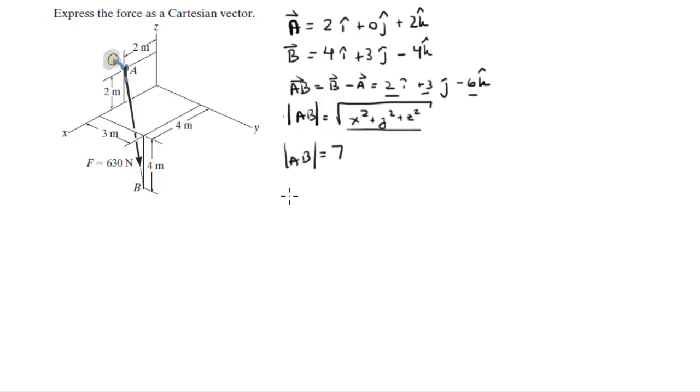Now that you have the magnitude, you can find the unit vector A to B. The unit vector A to B is a vector with a magnitude of 1, aiming in the same direction as vector A to B and the force. The unit vector is found by dividing the vector by its magnitude.